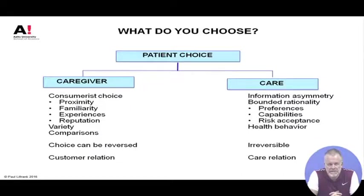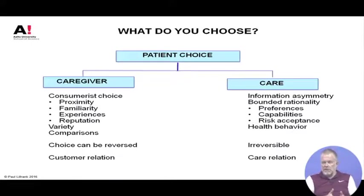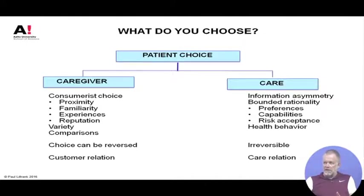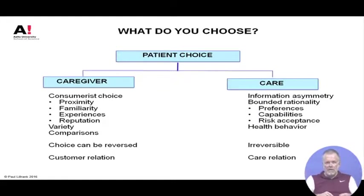Patient choice — we discussed the power gap and observed that in healthcare there is information asymmetry. From this follows that in certain situations certain patients are not able to make rational choices like they do as customers in any other commercial market, so your choice is constrained by urgency, pain, confusion, anxiety, lack of knowledge or understanding, and so on.